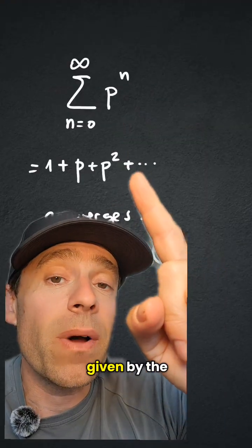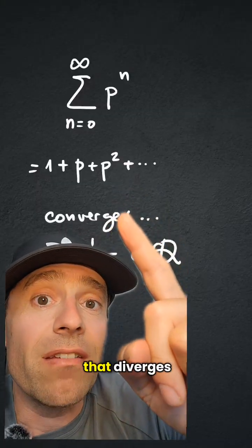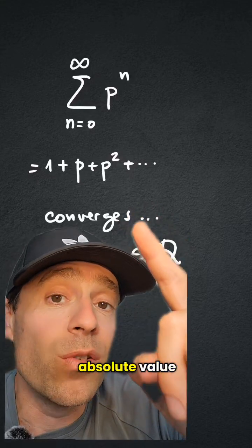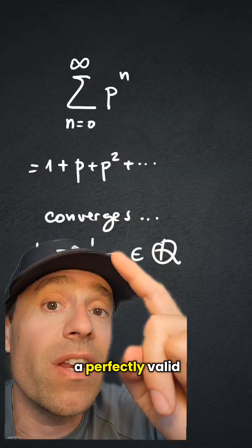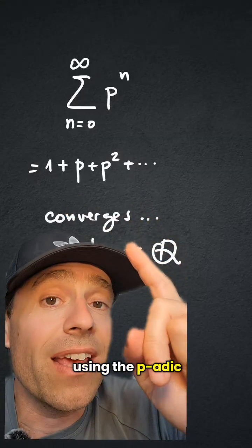For example, the series that is given by the sum of all the powers of p is a series that diverges using the usual Euclidean absolute value, but as a p-adic number is a perfectly valid p-adic number, this series converges using the p-adic absolute value.